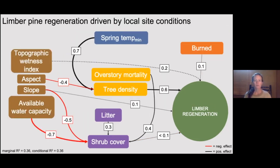In contrast, limber pine regeneration was driven more by local site conditions, primarily mature tree density and an indirect positive effect of spring minimum temperature. The primary disturbance at limber pine sites was fire; however, it didn't have any apparent effects on regeneration density. The overall low explanatory power of this model is consistent with our understanding of limber pine as a generalist species that exhibits broad environmental tolerances as well as potentially high phenotypic plasticity.